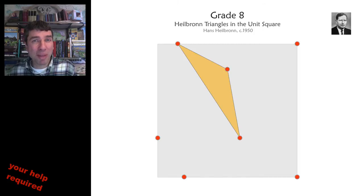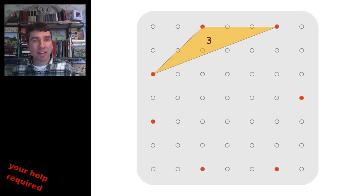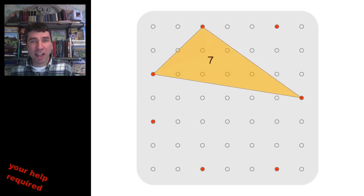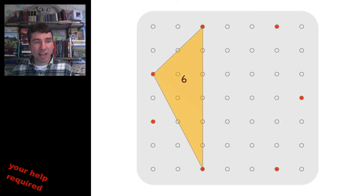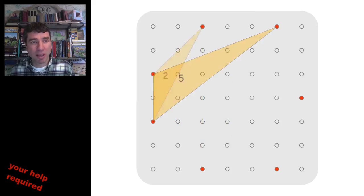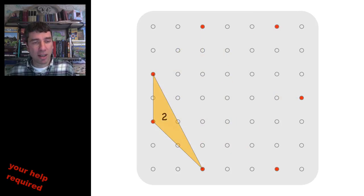To make the problem even more appropriate for grade 8, we're going to put it on a lattice. So here, we're trying to find the smallest triangle, and we're trying to make that as big as possible. This looks pretty good. It looks like we've got 2. Can we do better?